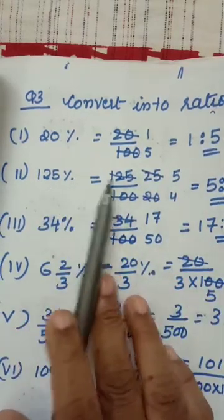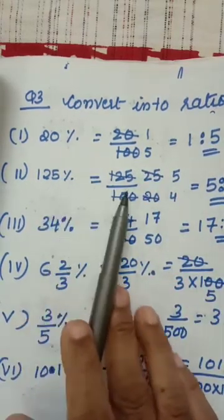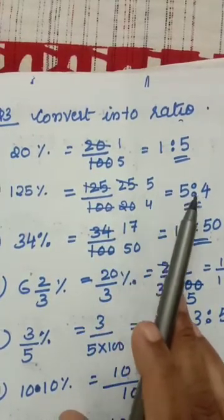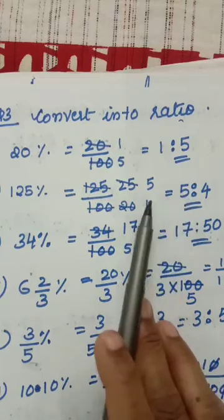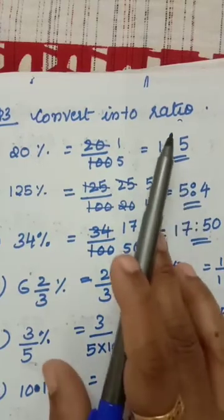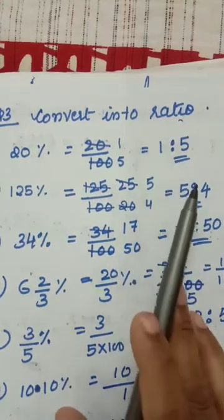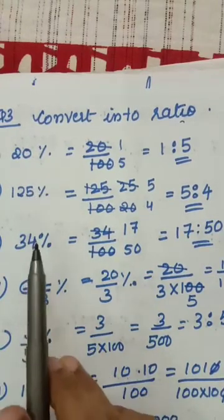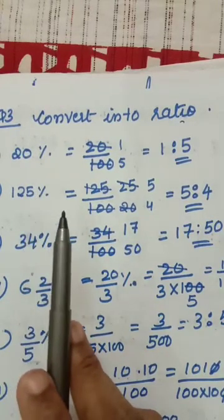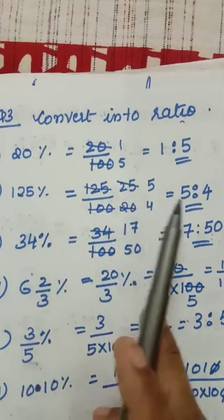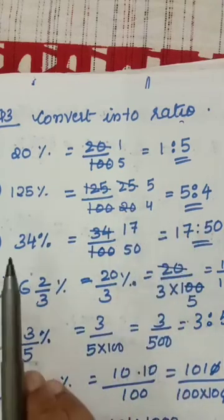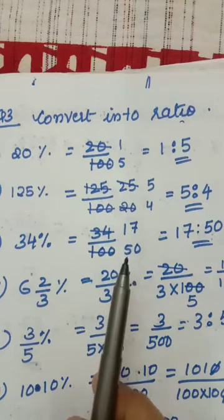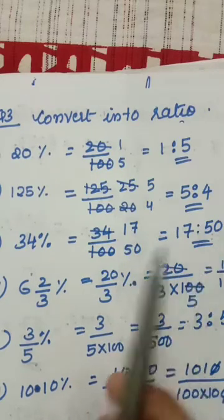125 percentage means divided by 100 — cut out and you get 5 by 4. Ratio form: 5 ratio 4 — numerator first, then denominator. Ratio means divided only. 34 percentage: 34 by 100 gives 17 by 50, which is 17 ratio 50.